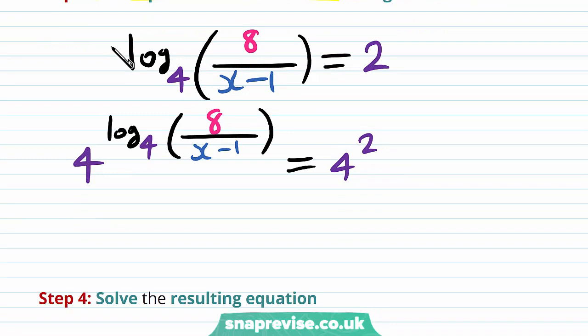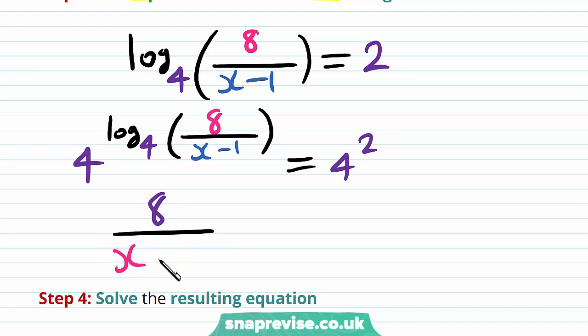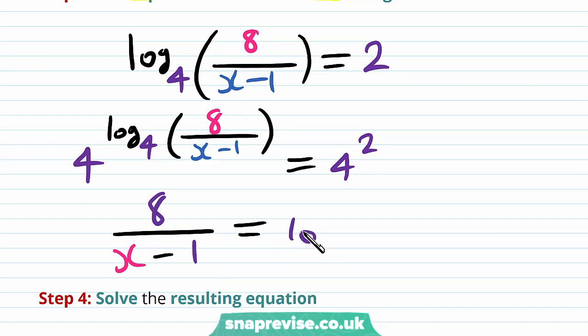The left hand side, therefore, is just going to be 8 divided by x minus 1, because the power and the logarithm cancel themselves out as inverse functions. And this will be equal to 16.